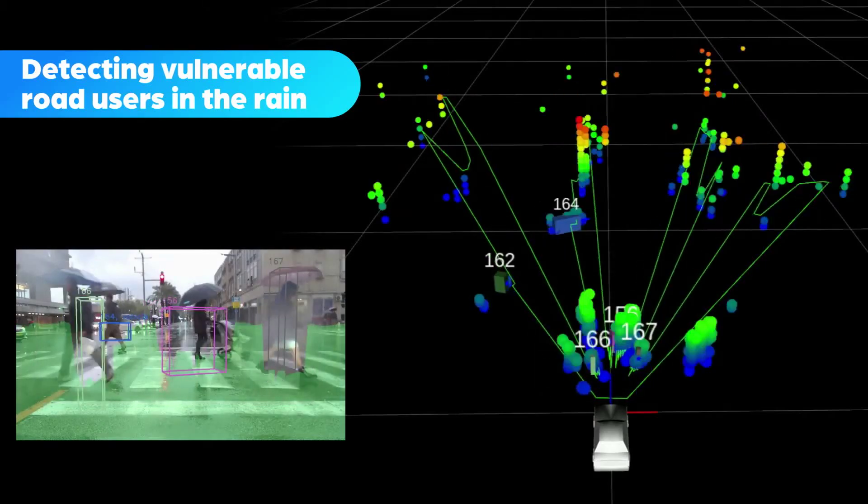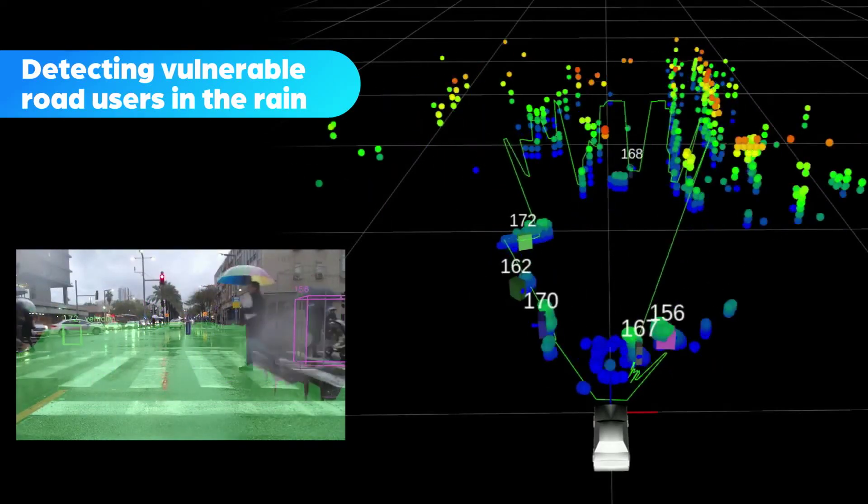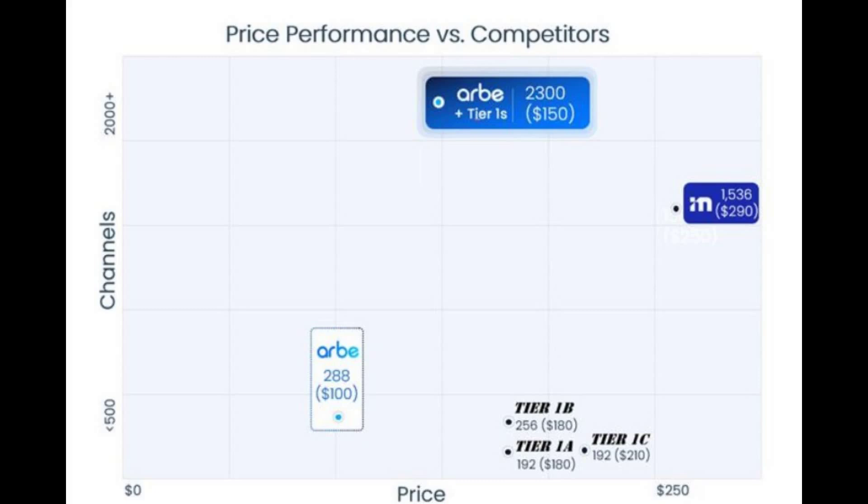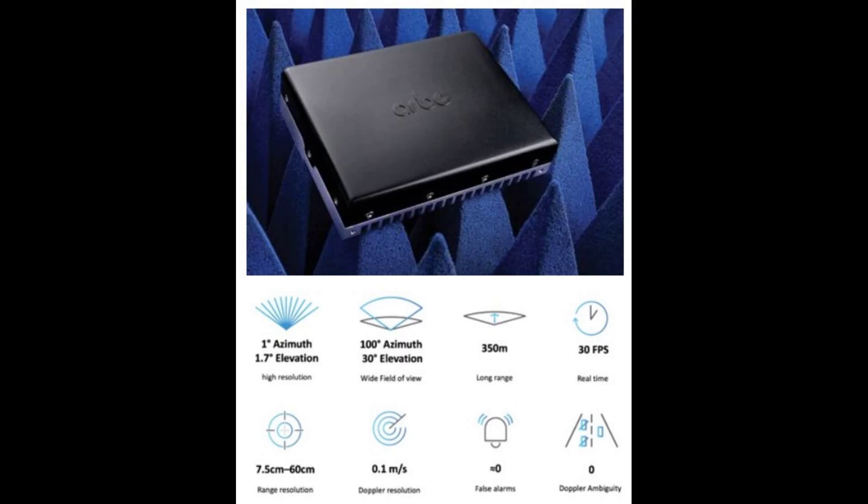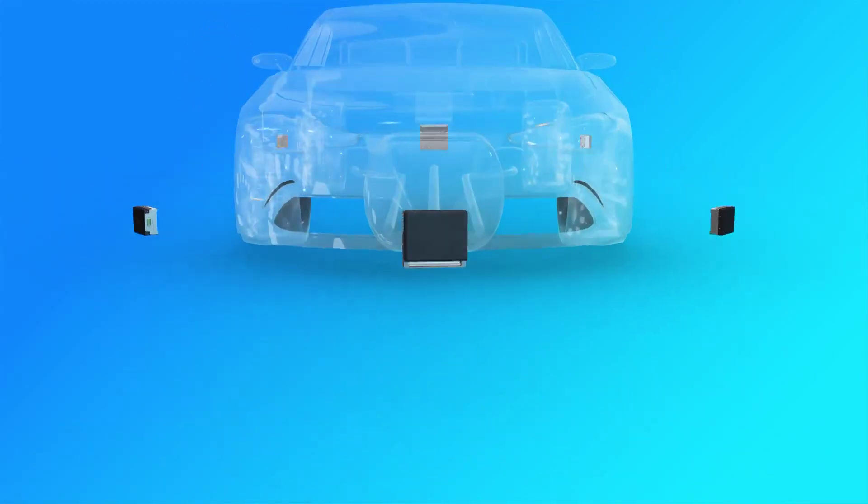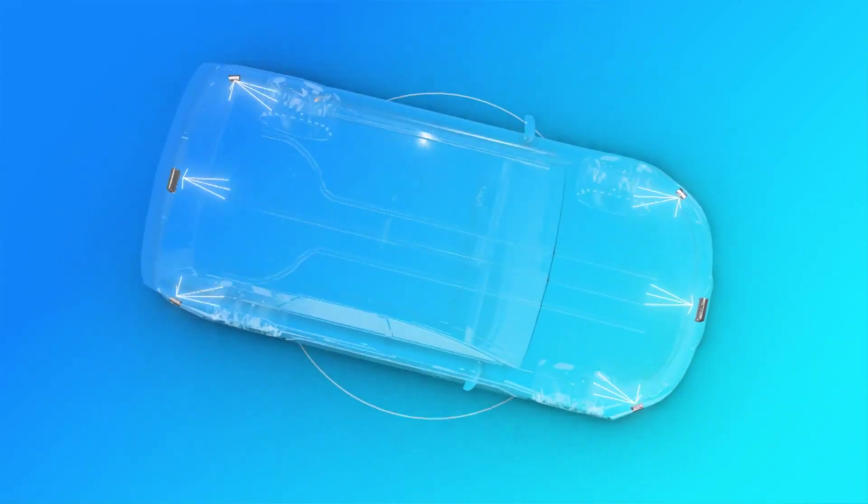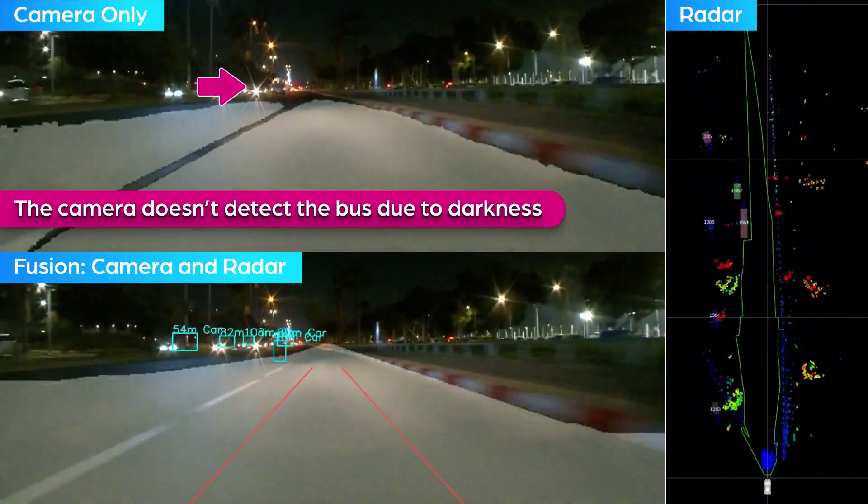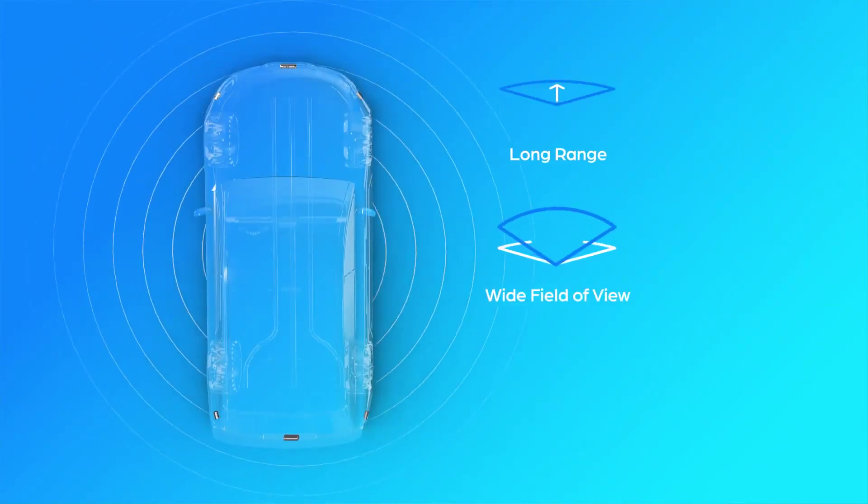Its ultra-high-resolution radar technology offers 2,304 virtual channels, 10 times more than competing systems, running through 48 transmitting and 48 receiving channels, allowing it to create dense, detailed point clouds with over 100,000 detections per frame.